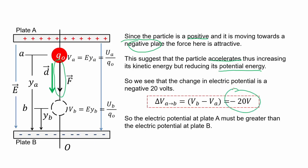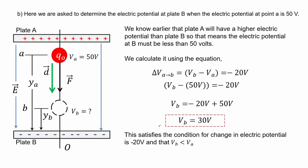So the electric potential at plate A must be greater than the electric potential at plate B. We are asked to determine the electric potential at plate B when the electric potential at point A is 50 volts. Since plate A has a higher electric potential than plate B, the electric potential at B must be less than 50 volts. Using the equation we get that the electric potential at B is 30 volts. This satisfies the condition: the difference results in minus 20 volts and electric potential at B is less than at A.